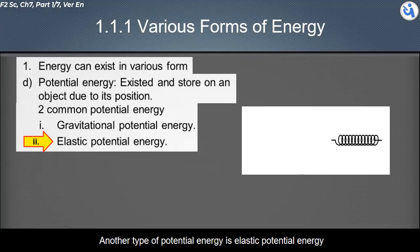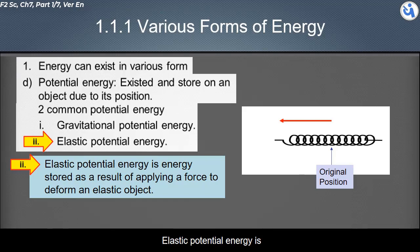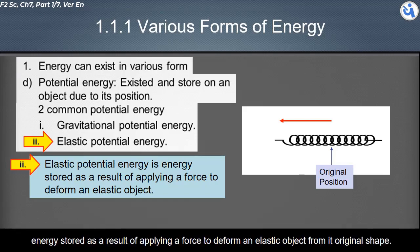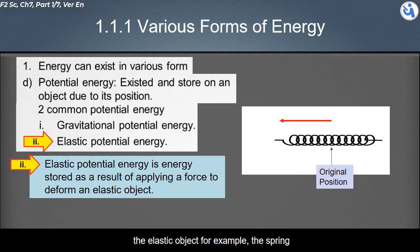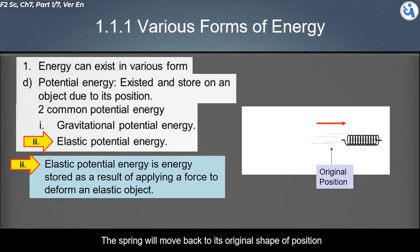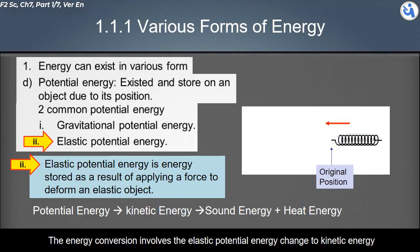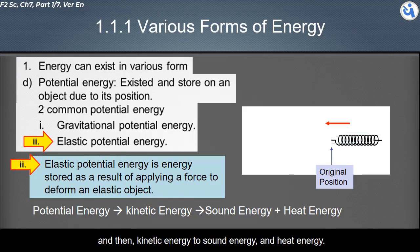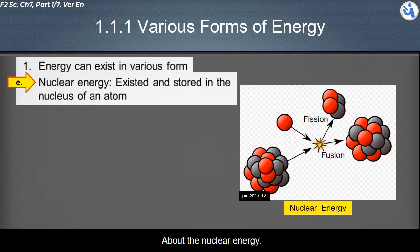Another type of potential energy is elastic potential energy — energy stored as a result of applying a force to deform an elastic object from its original shape. For example, when a spring is released from a stretched position, it moves back to its original shape. The energy conversion involves elastic potential energy changing to kinetic energy, and then kinetic energy converting to sound energy and heat energy.